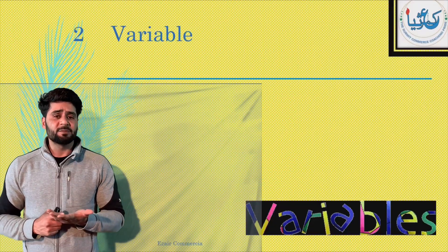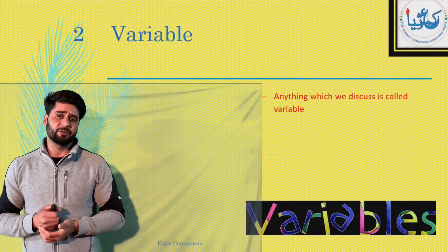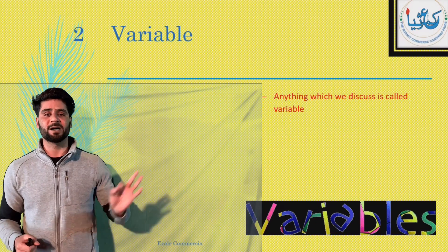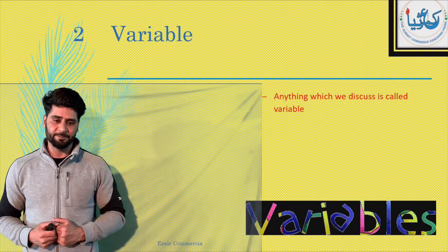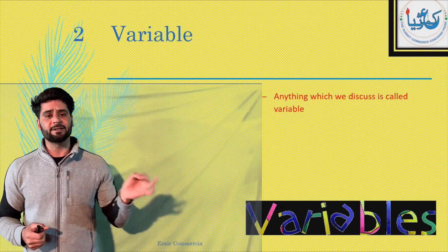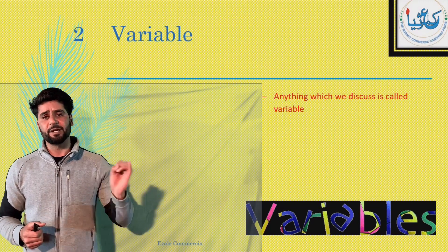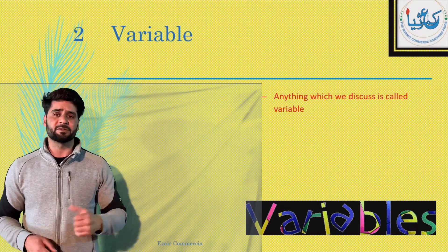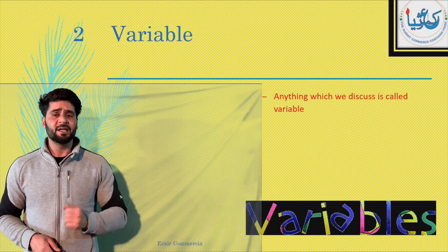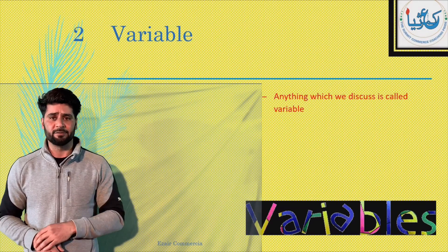Jis kisi bhi term ke baare mein baat kar rahe ho, toh usi ko variable kehte hai. For example, you are talking of marks — marks is a variable. Aap discuss kar rahe ho height — height is a variable. Aap discuss kar rahe ho income — income is a variable. So anything which we discuss is called a variable.